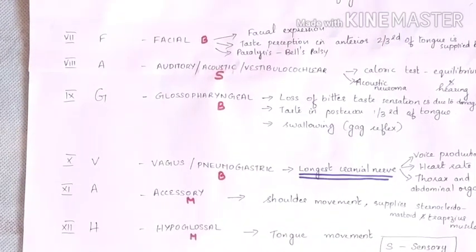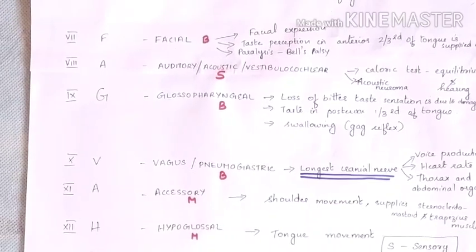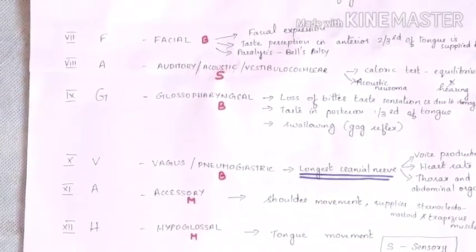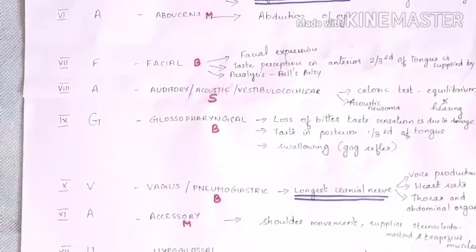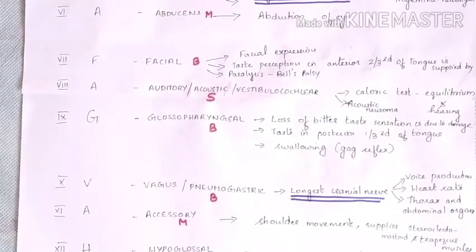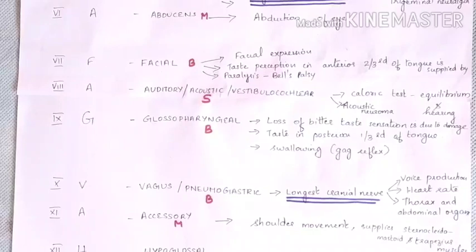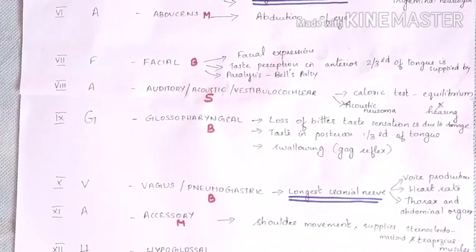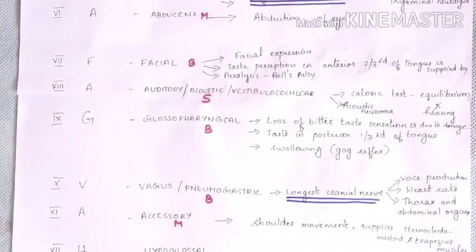Those are the 12 pairs of cranial nerves along with mnemonics to remember them and the peculiarities of each nerve. If you like this channel, please subscribe and press the bell icon to get notifications. Thank you.